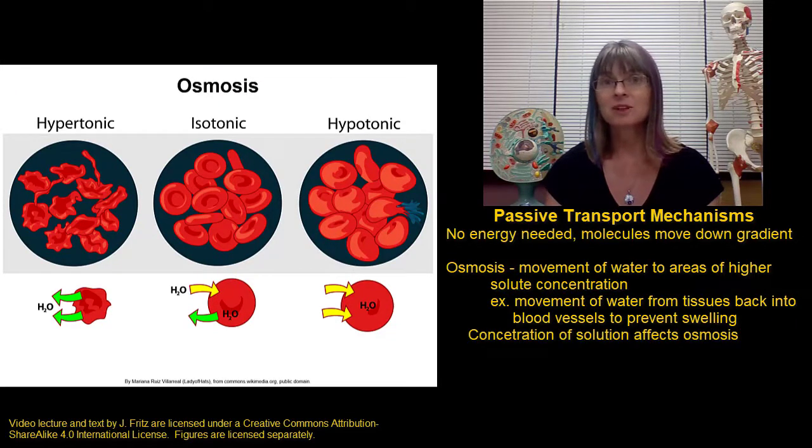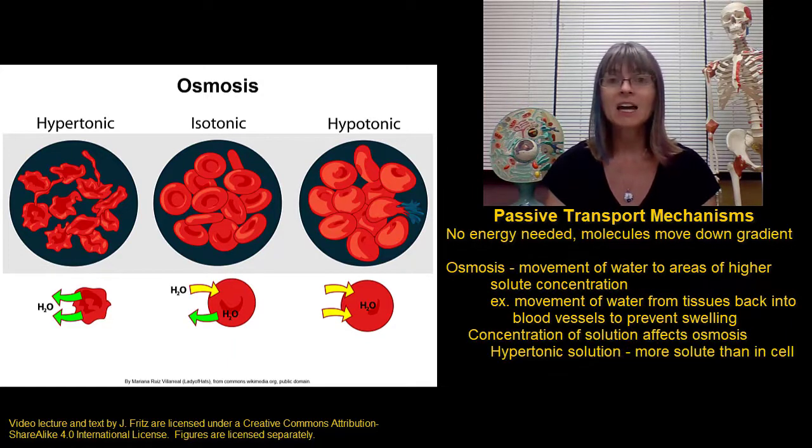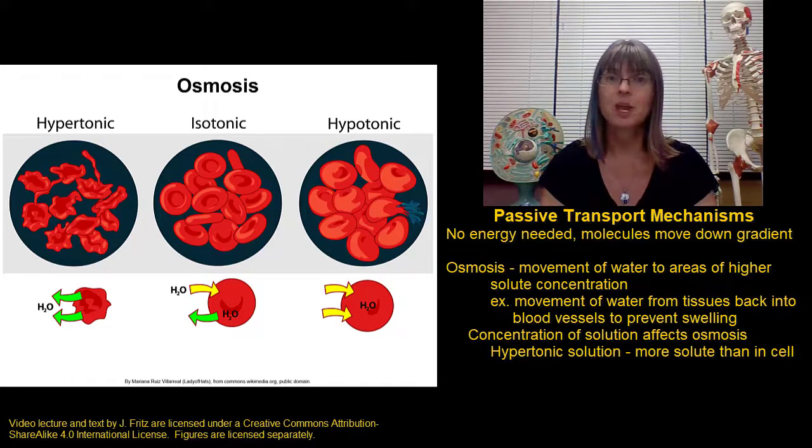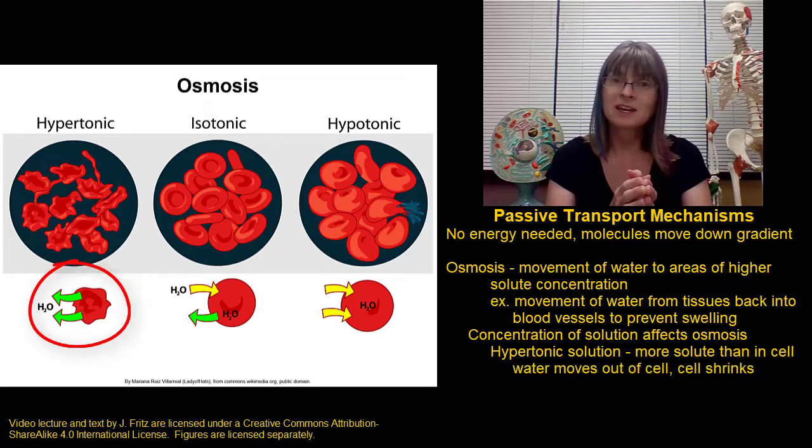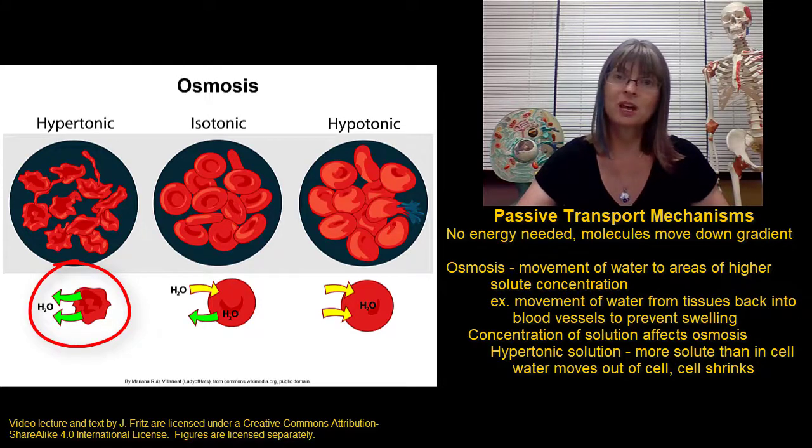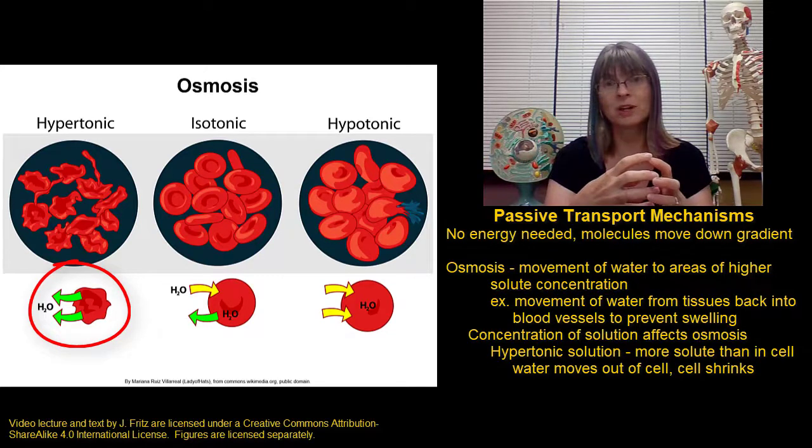The amount of solute in the solution surrounding a cell has an effect on the movement of water in and out of the cell. Let's start by considering a cell in a hypertonic solution. In a hypertonic solution, the concentration of solute on the outside of the cell is much higher than the amount of solute inside the cell. Remember that water wants to move to areas of higher solute concentration. Water will move from the inside of the cell, where there's a lower concentration, to the outside of the cell, where there's a higher concentration of solute. As water is moving out of the cell, this can cause the cell to shrink and shrivel.